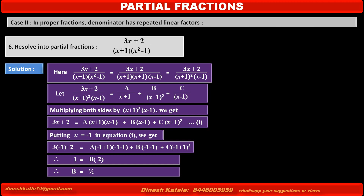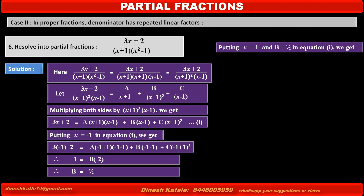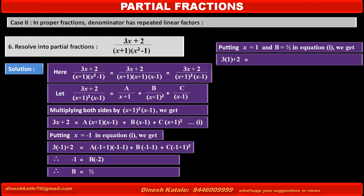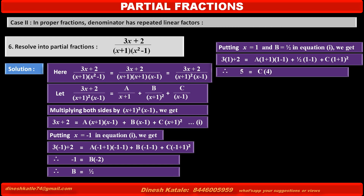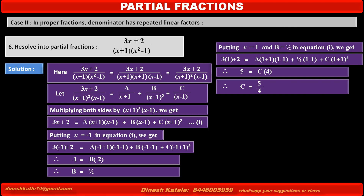Now it is easy to find the value of C by cancelling terms of A and B, making the common factor (x - 1) equal to 0. That is, putting x = 1 and B = 1/2 in equation 1, we get: 3(1) + 2 = A(1 + 1)(1 - 1) + (1/2)(1 - 1) + C(1 + 1)². Solving, we get 5 = C(4), therefore C = 5/4.